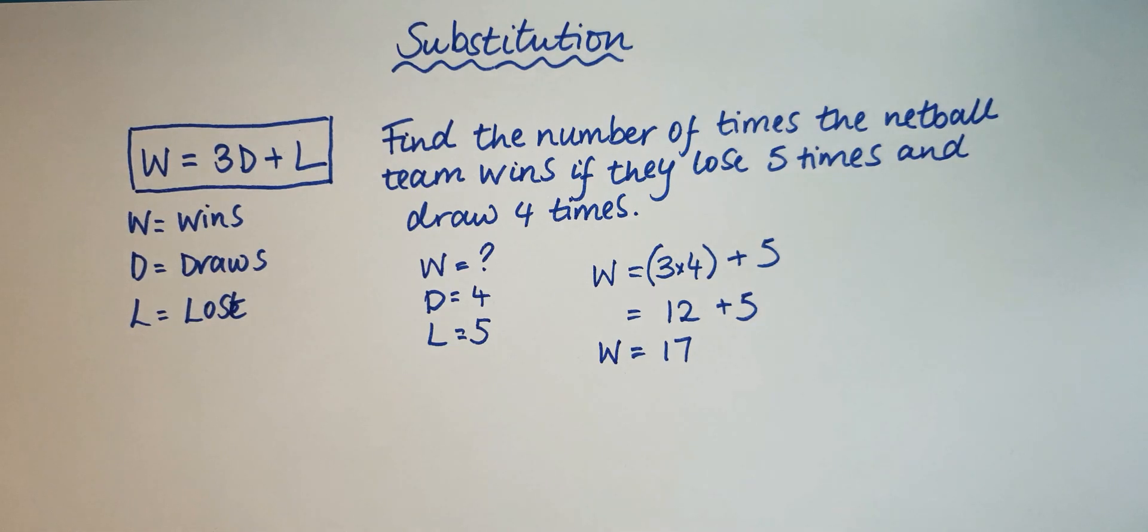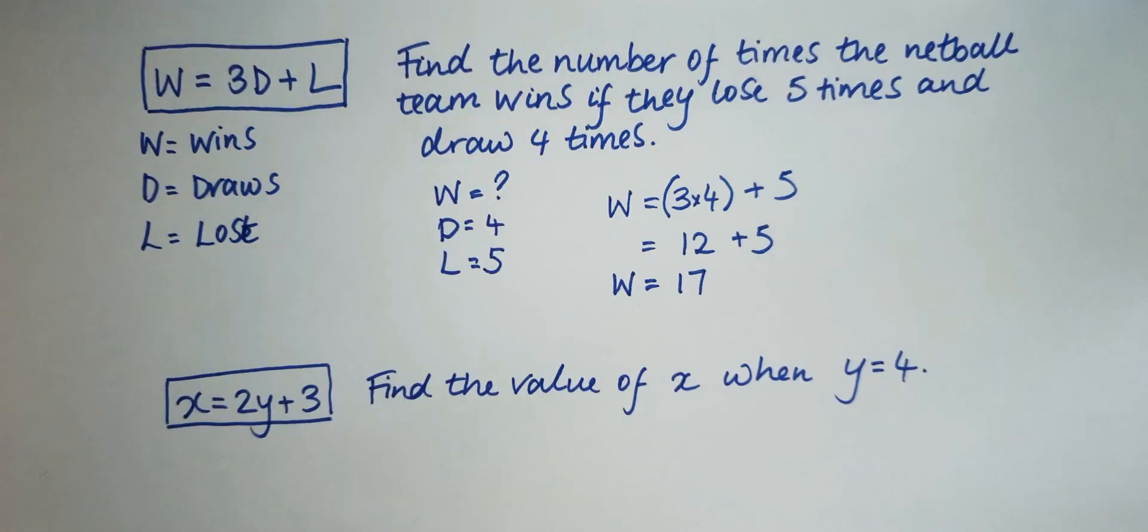So the number of wins is 17. So that was one example of a substitution question that you could get. There are other ones we can look at, another very simple one. And here it gives us a formula: x is equal to 2y, so 2 times y, plus 3.